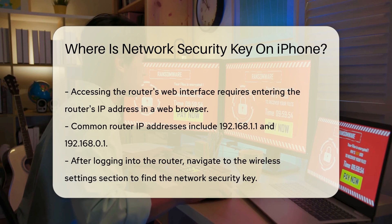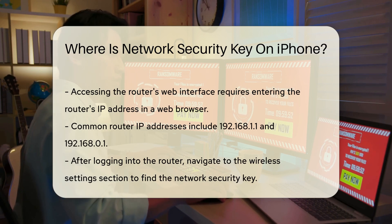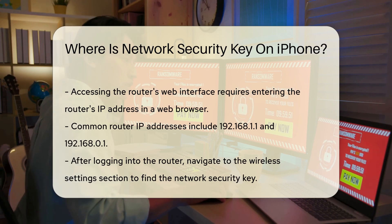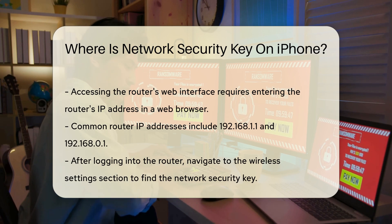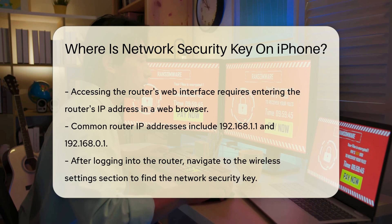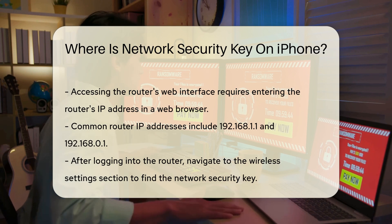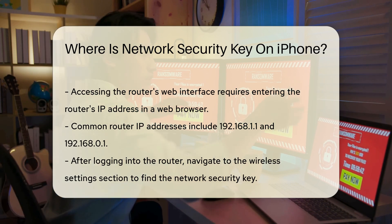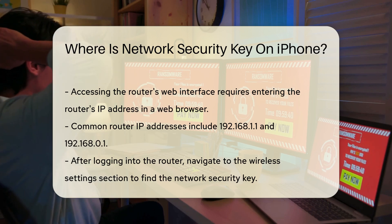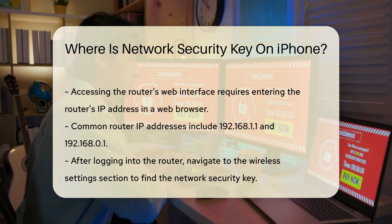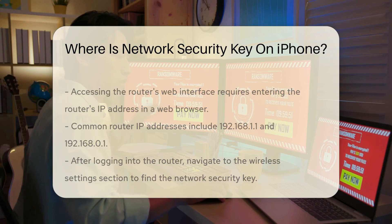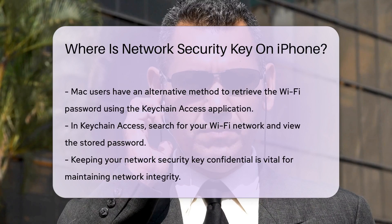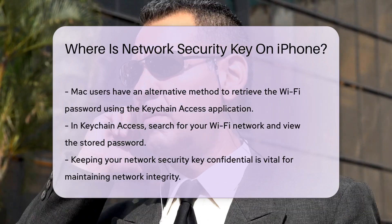If you have forgotten your Wi-Fi password, one method to retrieve it is through your router's web interface. This requires entering the router's IP address in a web browser. Common IP addresses include 192.168.1.1 or 192.168.0.1. Once logged in, navigate to the wireless settings section. Here, you can find the network security key listed as the WPA or WPA2 passphrase.